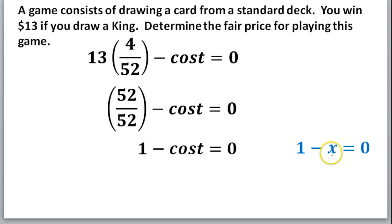If 1 minus x equals 0, and I want to get x by itself, I would add x to both sides. So we're going to add the cost to both sides, treating it exactly the same as our x.